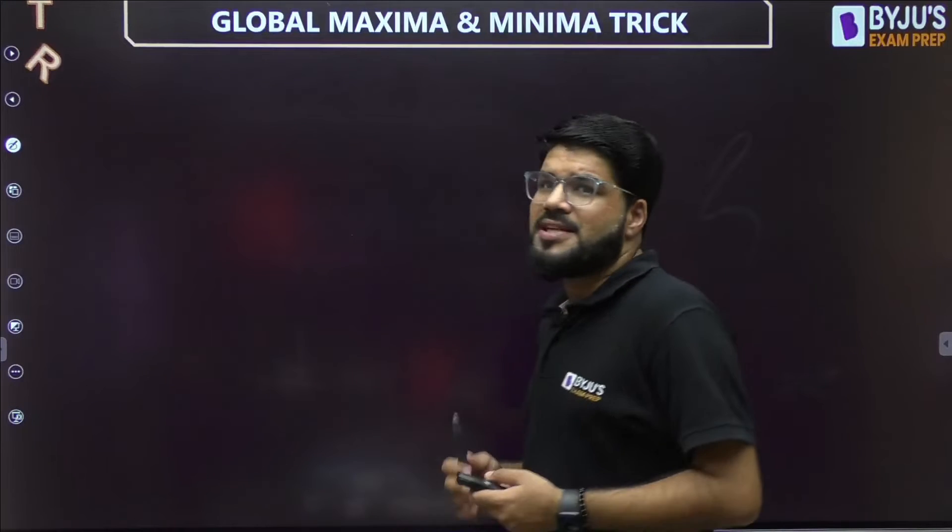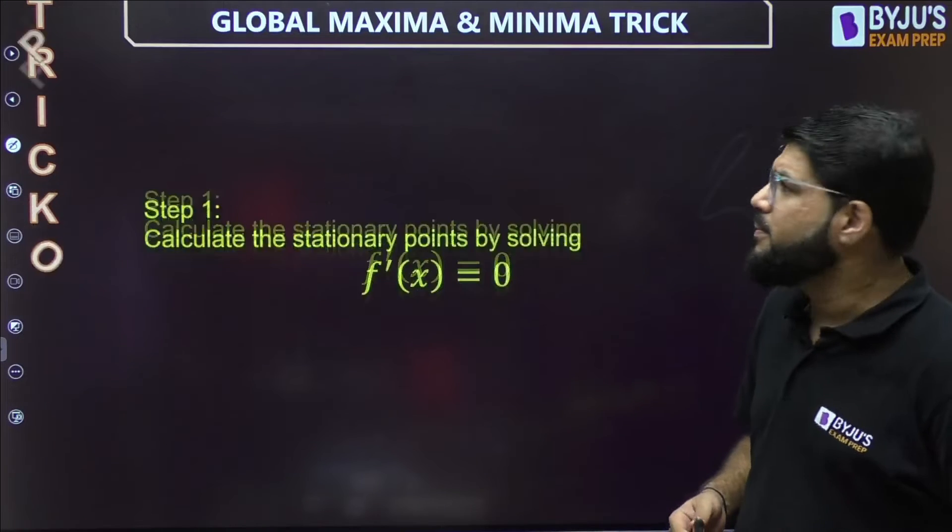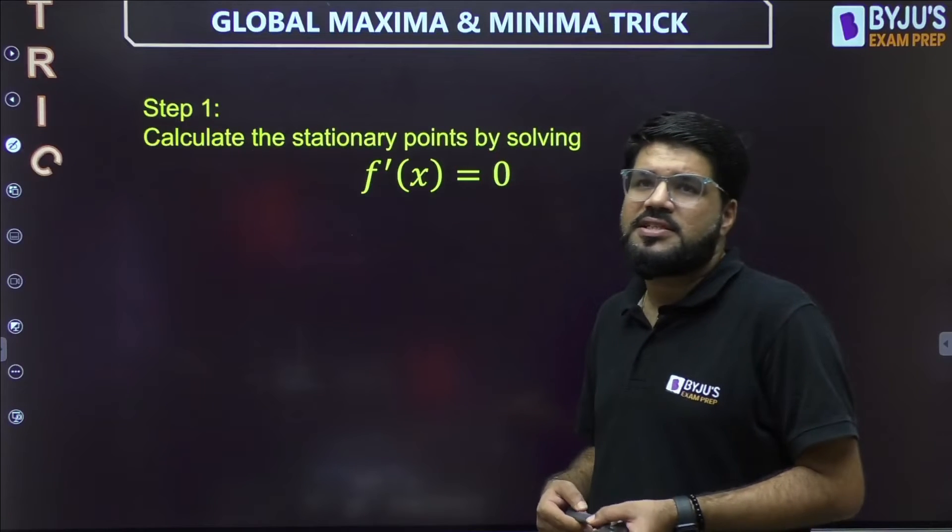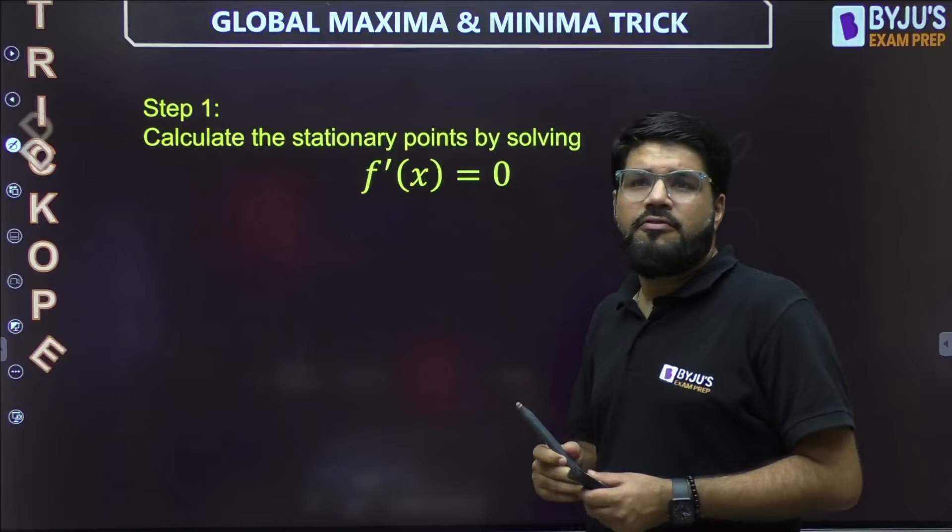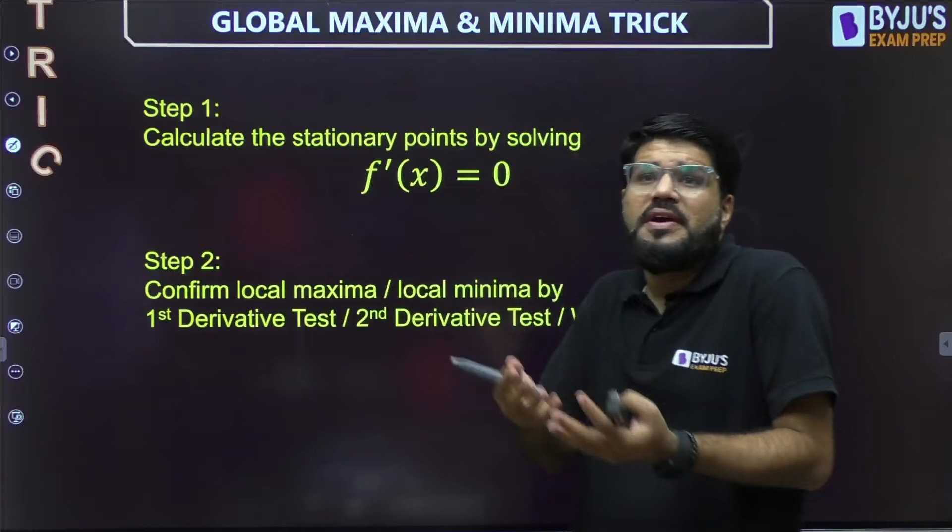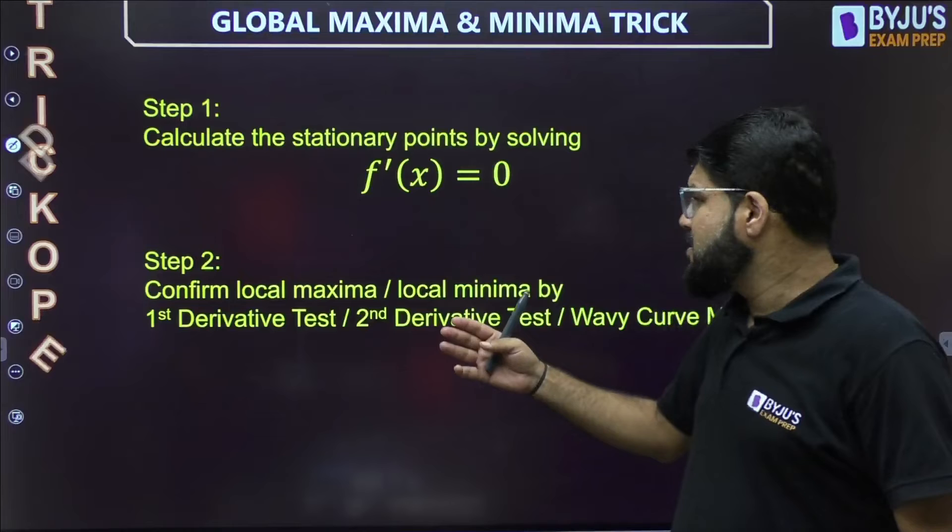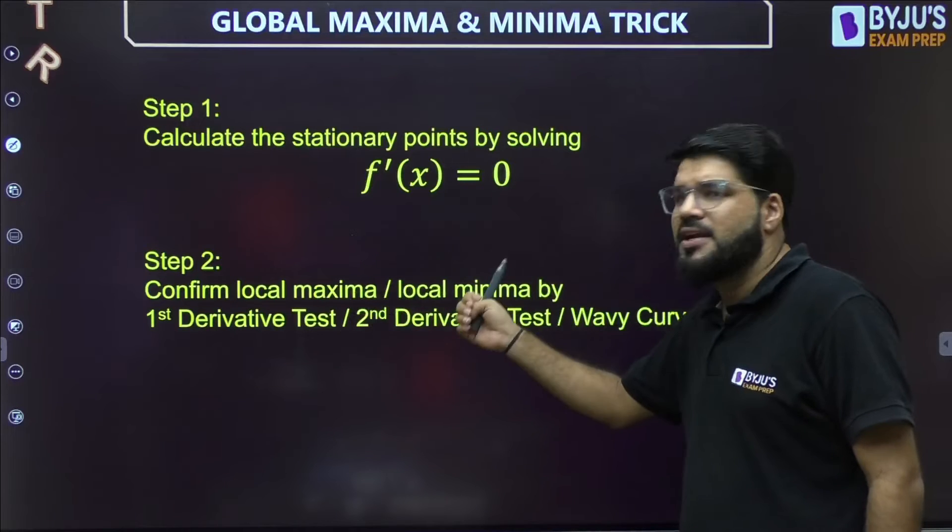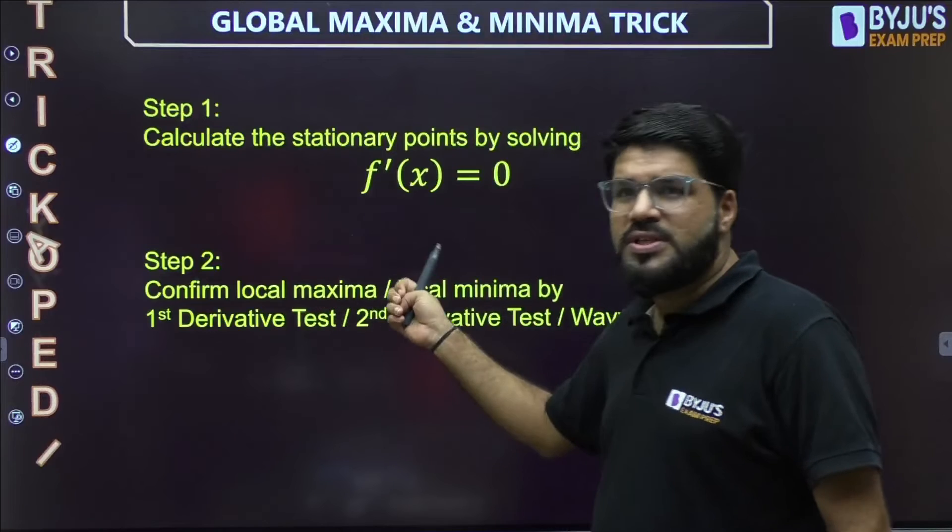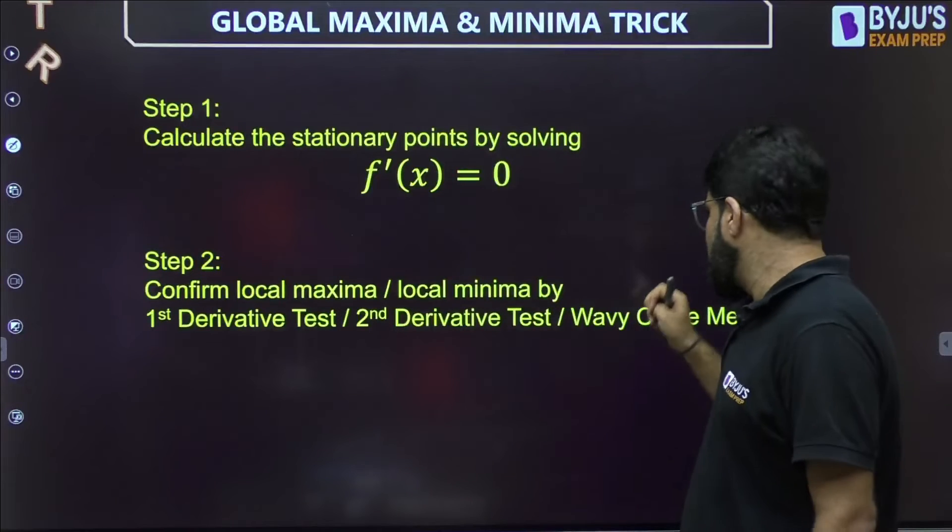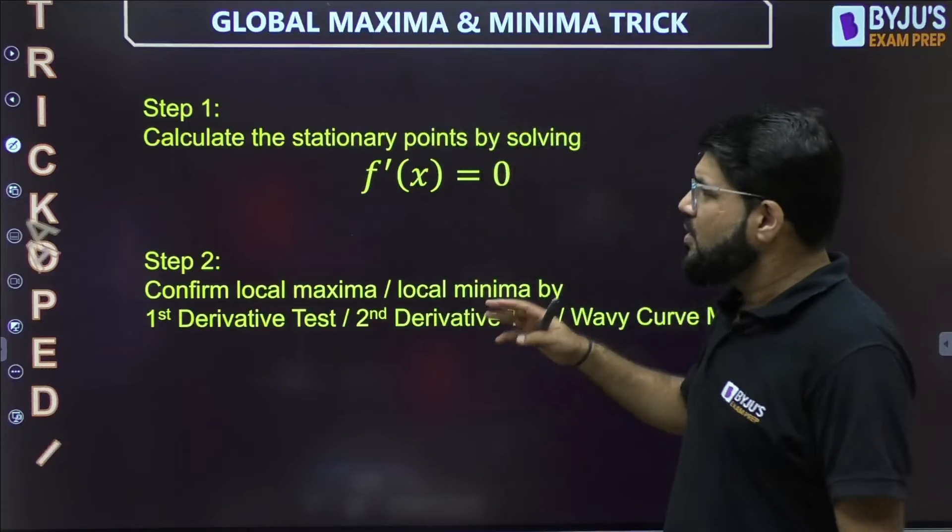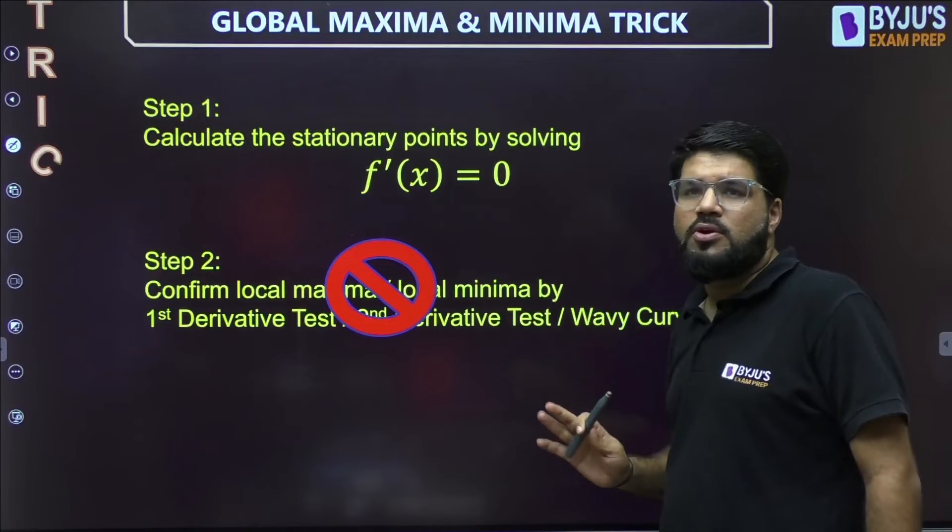Normally, you know what are the steps that we follow for global maxima and global minima. Number one, we will try to calculate the stationary points by the equation first derivative f'(x) = 0. Then we will confirm whether that stationary point is a local maxima or local minima by either first derivative test, or second derivative test, or the wavy curve shortcut using the concept of first and second derivative. But now the technique that I am going to give you, we don't need this step number two.